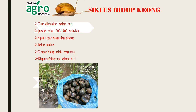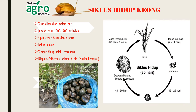Berikut siklus hidup keong. Telur keong diletakkan di pangkal batang padi muda dengan masa inkubasi 7-14 hari. Telur menetas, dan setelah 15-25 hari telur berubah menjadi keong muda. Di umur 49-59 hari, keong muda berubah menjadi keong dewasa yang matang secara seksual. Di umur 60 hari sampai 3 tahun, keong dewasa ini akan terus berproduksi untuk menghasilkan telur.